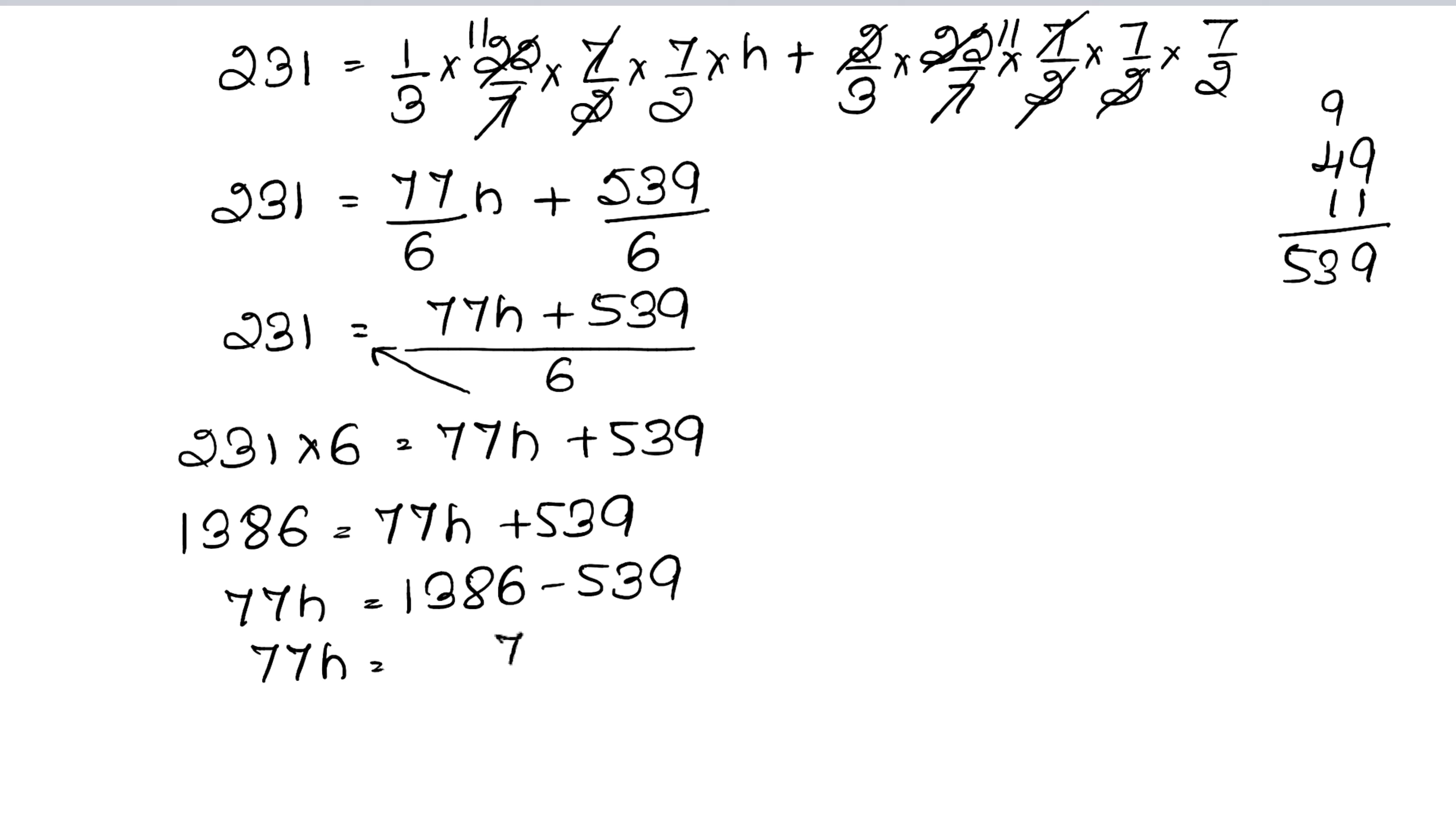So 6 1s are 6, 6 3s are 18, 6 2s are 12, 1386 equals to 77h plus 539. 539 minus, so 77h equals to 1386 minus 539, that is 77h equals to 847.